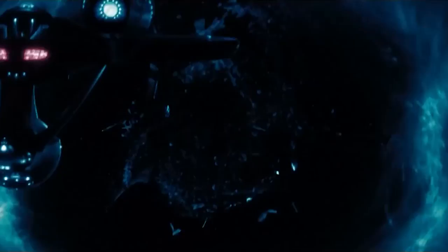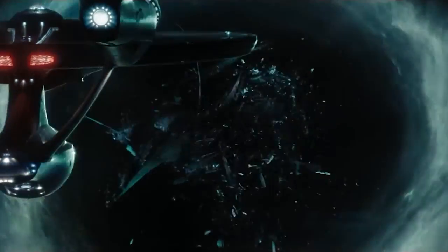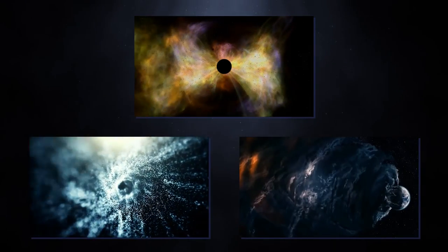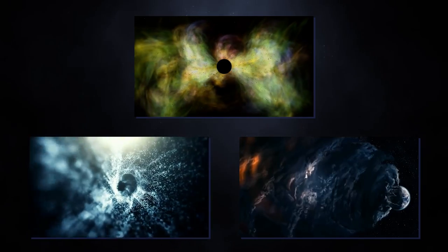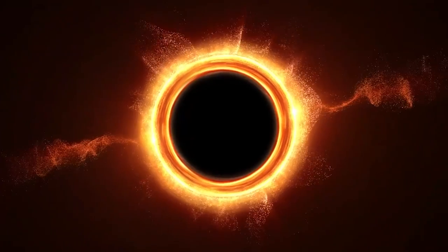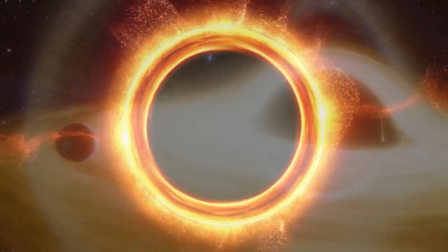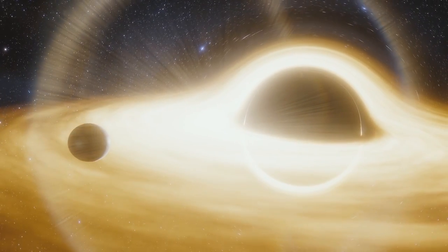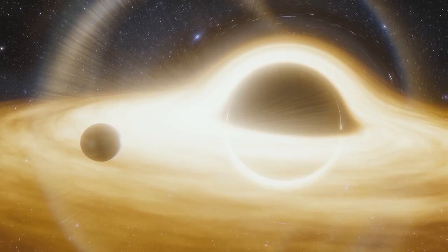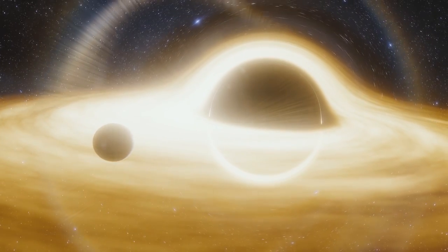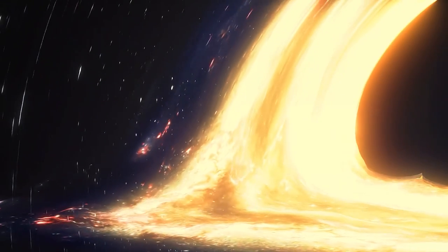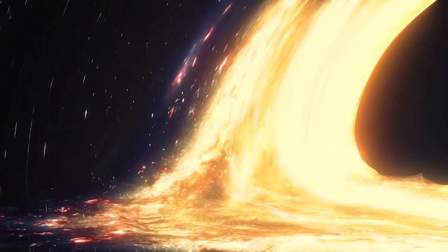Black holes have a strong gravitational pull. As objects such as gas, dust, or even other stars come close to a black hole, they can be pulled into an accretion disk, a swirling disk of superheated matter orbiting the black hole, before eventually being consumed. Black holes can also generate powerful jets of particles and radiation.